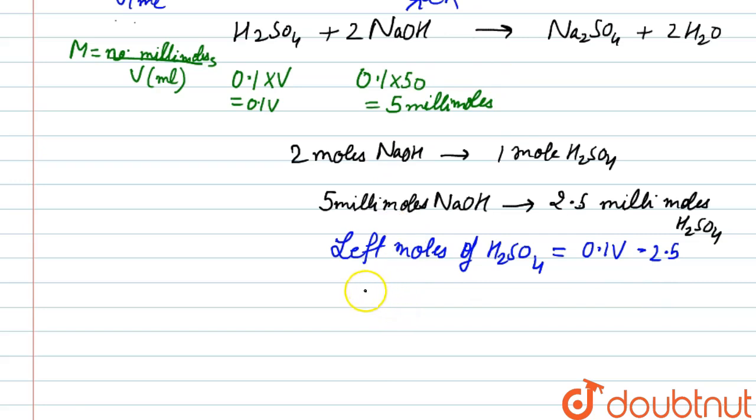We will write down the molarity. It will be 0.1V minus 2.5 over the volume of solution. Now these both are added, so the solution will have volume of both. It will be V plus 50 ml.